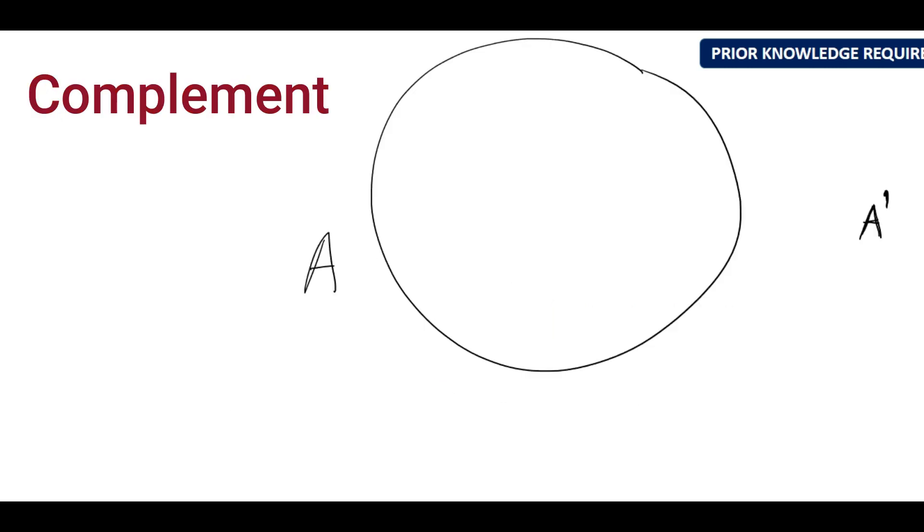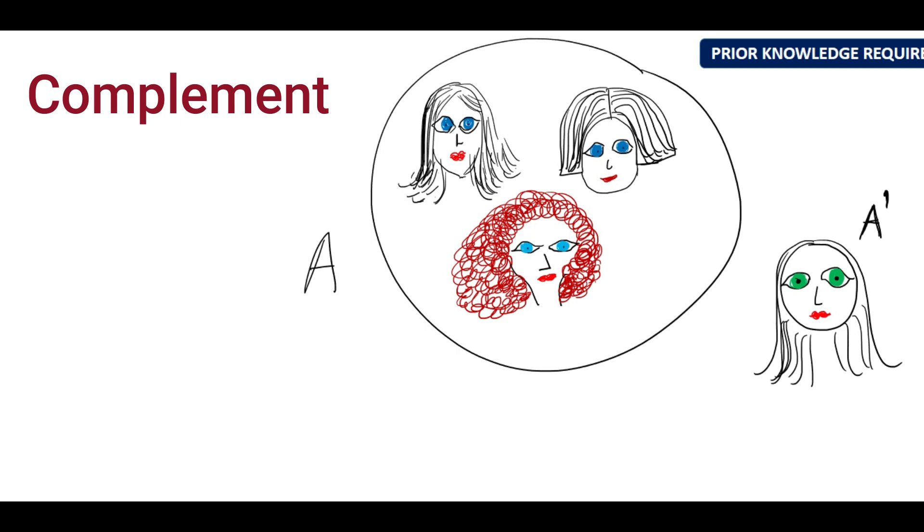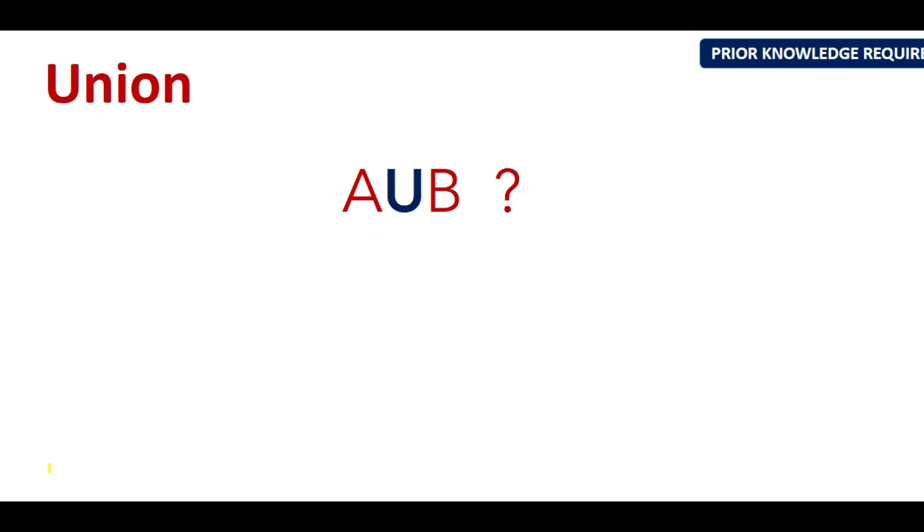Complement is when you have a set of girls which have blue eyes. So if you have someone with a green eye, you call her the A complement. So complement is nothing but not in the group. You have the set A denoted by the capital letter A and A complement, you have a dash A dash or A complement is something which is not in the group.